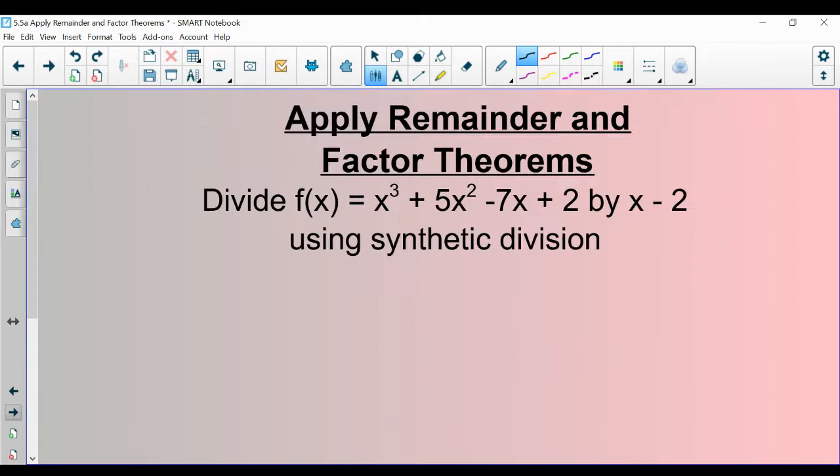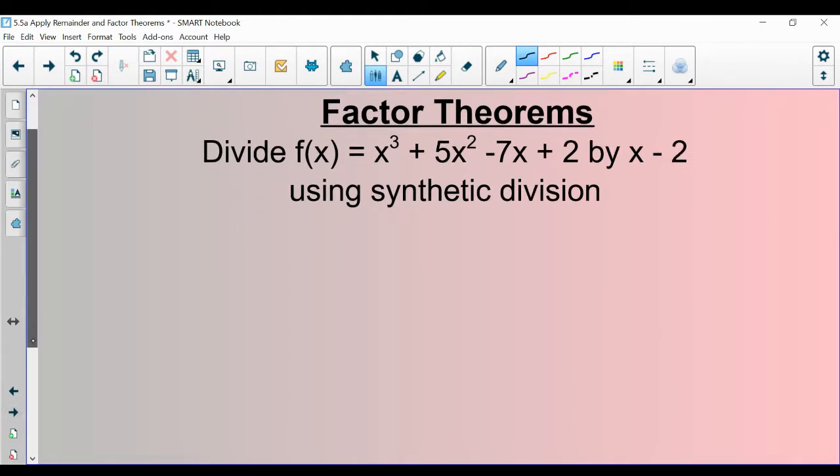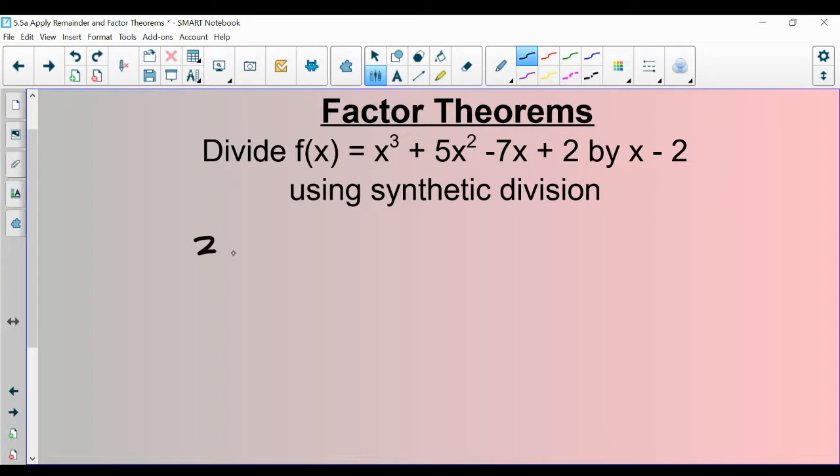Let's do one more where we get set up together and then you pause it and see how it goes. In this problem, 2 is going to be on the outside because that's what makes this 0. And then put all the coefficients in the first row. 1, 5, negative 7, and 2. Push pause here. See if you're able to figure this out on your own.